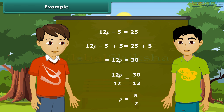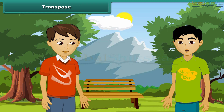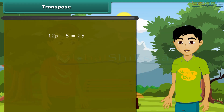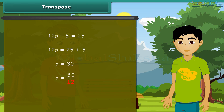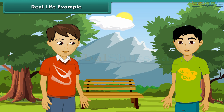Very good. Do you know that we can solve these problems by transposing also? What is transposing? Transposing means changing side. When we transpose any number, we change its sign: plus becomes minus, multiplication becomes division. So by transposing, 12P = 30 divided by 12, which gives the same result.